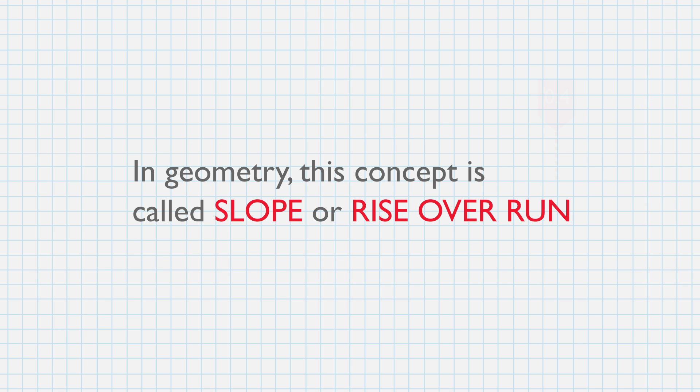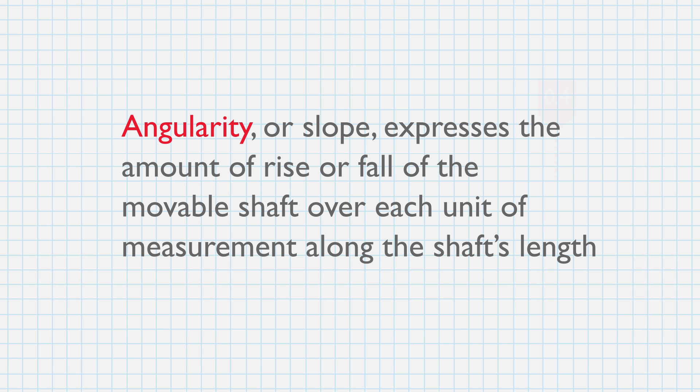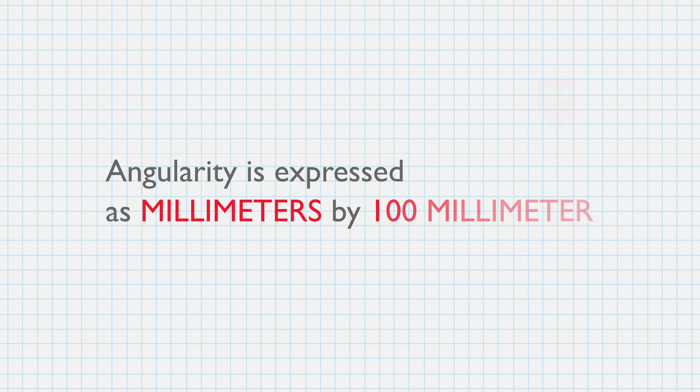So, what is our angularity? In geometry, this concept is called slope or rise over run. Angularity or slope expresses the amount of rise or fall of the movable shaft over each unit of measurement along the shaft's length. Angularity is expressed as mm by 100 mm.